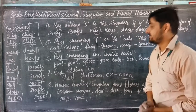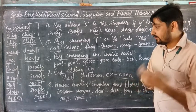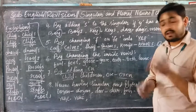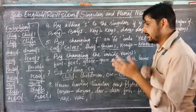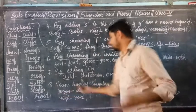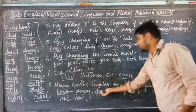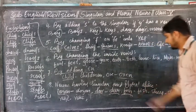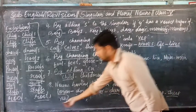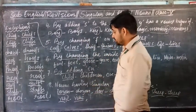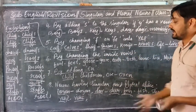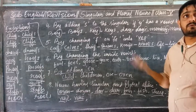Point number 5 also includes nouns that have singular and plural alike — they remain the same in both forms. For example: dozen, deer, fish, sheep, and yaw. In singular we say dozen, and in plural we also say dozen. Same for deer, fish, and sheep — these words do not change.